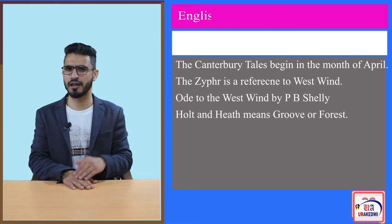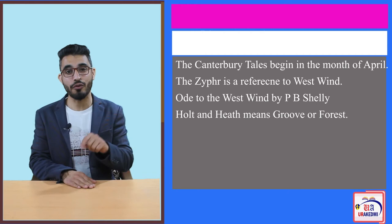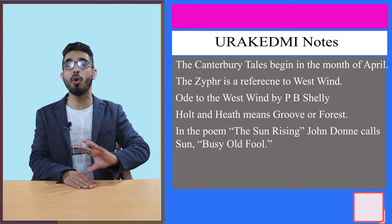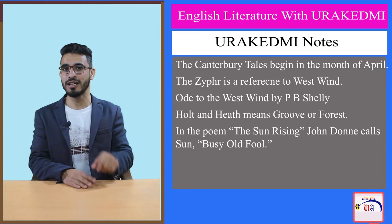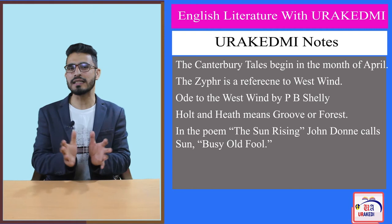If you have read or will read a poem by John Donne titled 'The Sun Rising,' he calls the sun 'old, busy, old fool.' In John Donne's poem the sun is old, but in Geoffrey Chaucer's poem the sun is young.